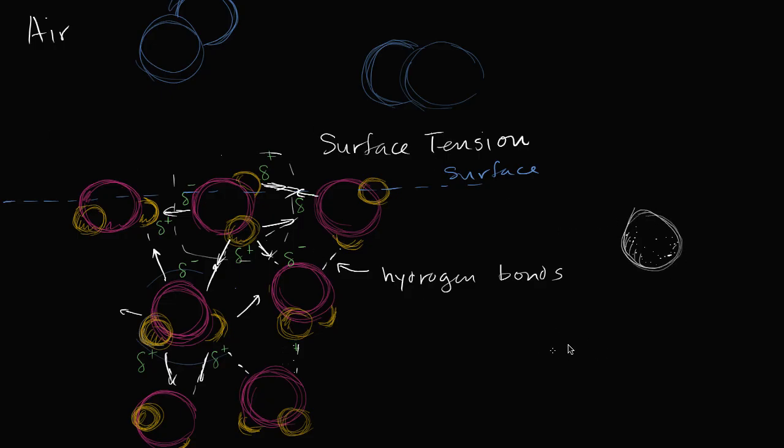You might have seen it if you go to a pond or a stream sometimes, you see some still water. Let's say that this is the surface of the water right over here. You might have seen insects that are able to walk on the surface of the water. And I'm not doing a great job at drawing the insects, they don't look exactly like that, but they can walk on the surface of the water.